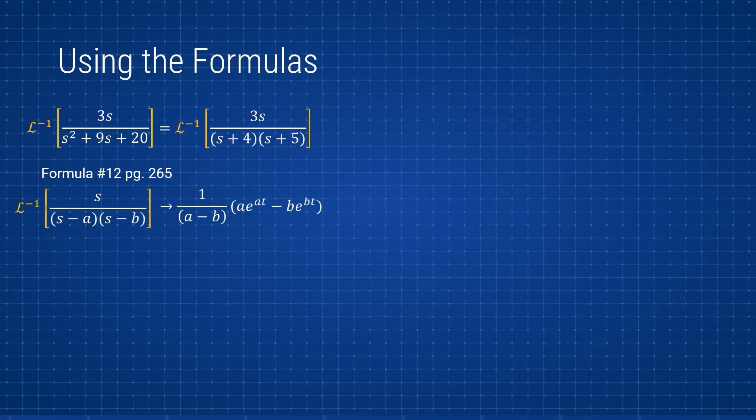For this problem here we have that a should be negative 4 and b negative 5. You can see because we have s + 4 when we should have s - a, so that means that a and b are negative numbers. That's basically all we need to do, we plug it in the formula given.